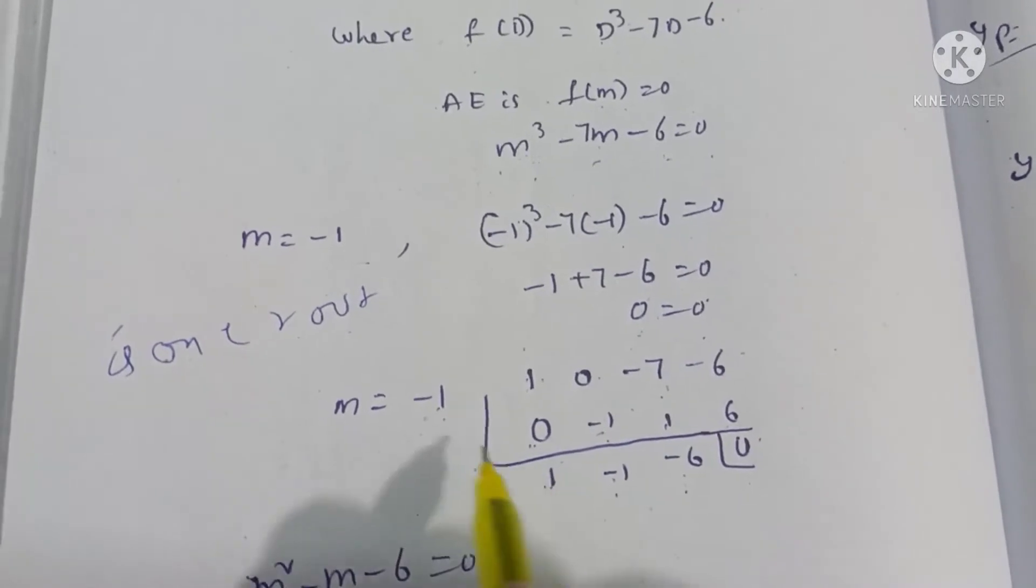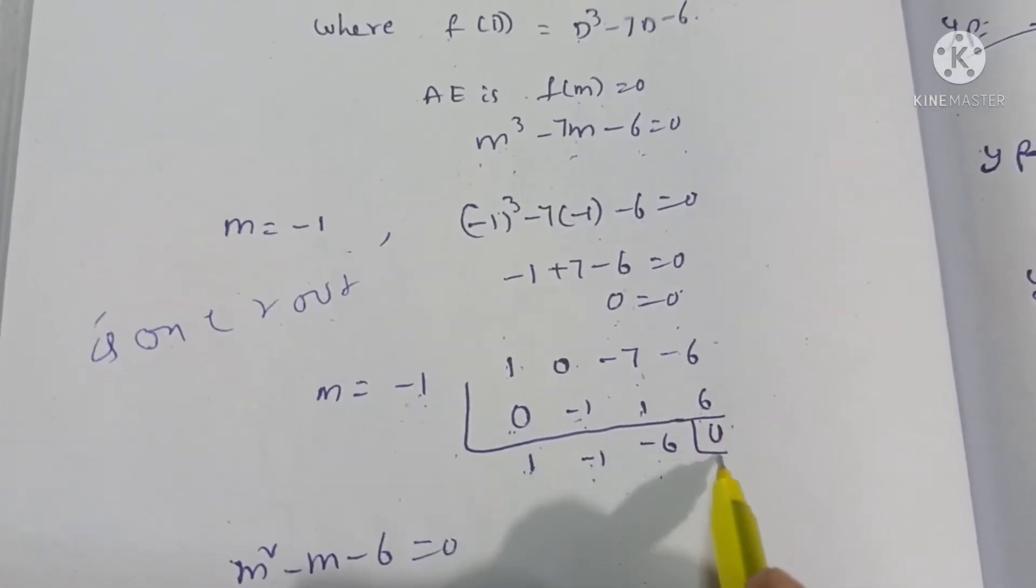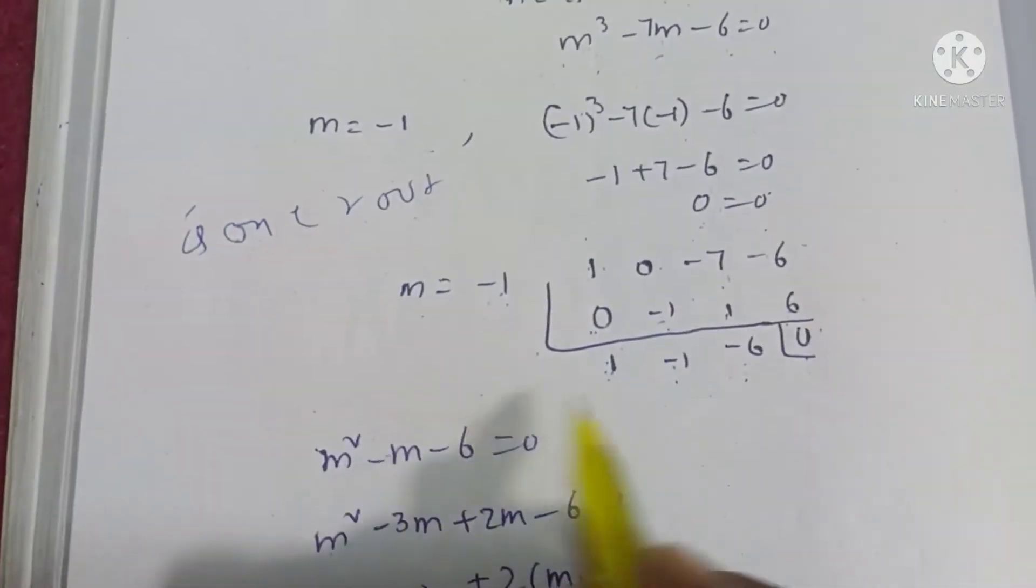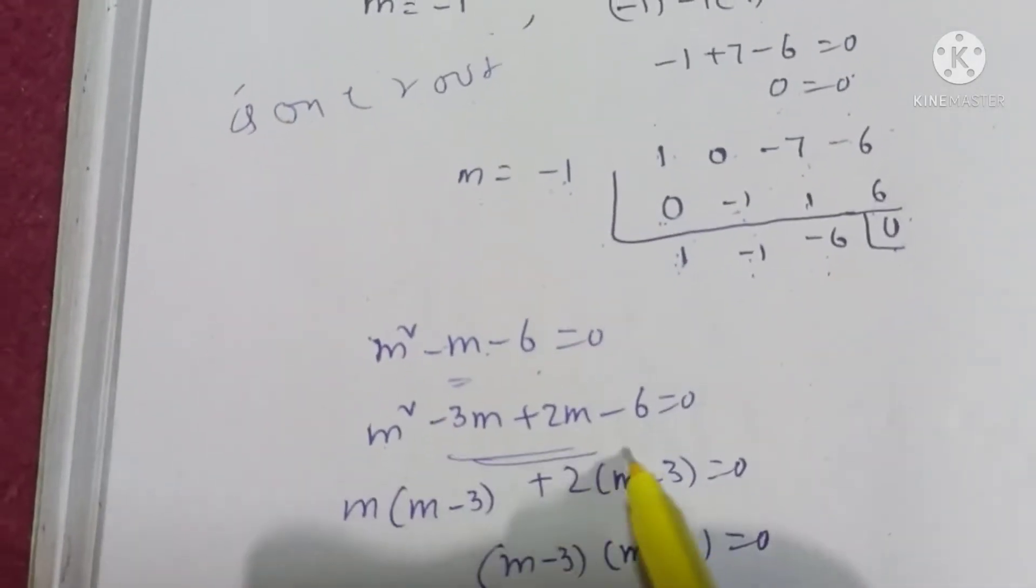We need to look at the values here: -1 times -1 is +1, so -7 plus 1 is -6. Then -1 times -6 is +6, and -6 plus 6 is 0.